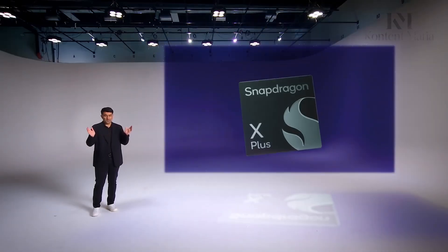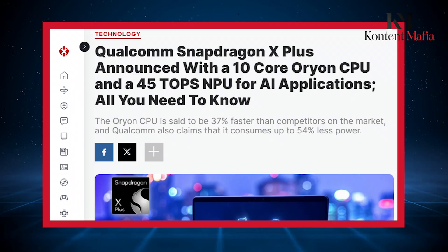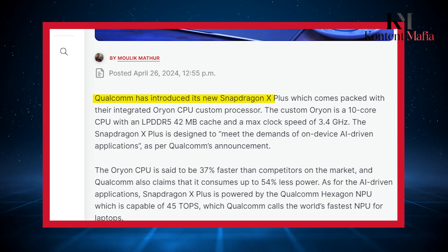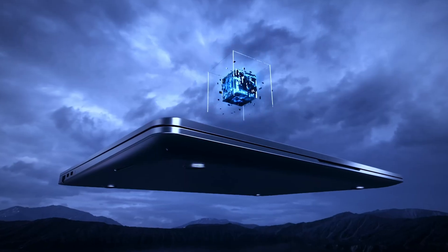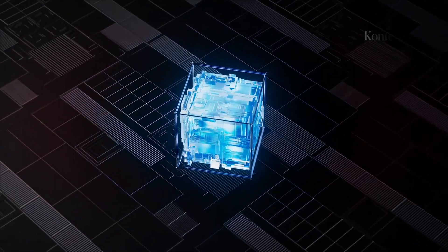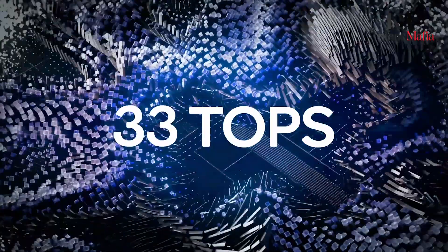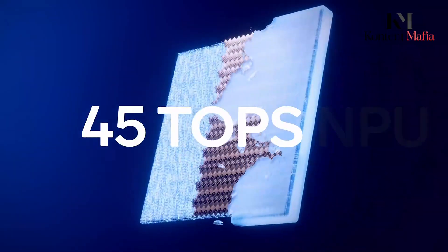The Snapdragon X Plus serves as Qualcomm's entry point with 10 Orion CPU cores, a 42 MB cache, a maximum 3.4 GHz CPU clock speed, and an integrated Adreno GPU pumping out 3.8 teraflops. Don't let its mainstream positioning fool you, even the X Plus packs the same potent 45 tops Hexagon AI engines as its Elite siblings.